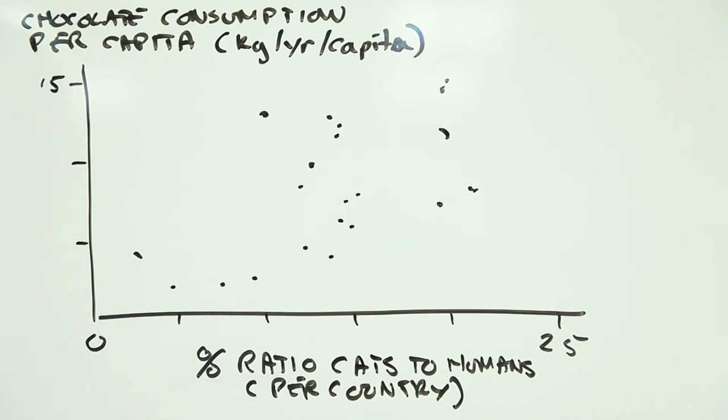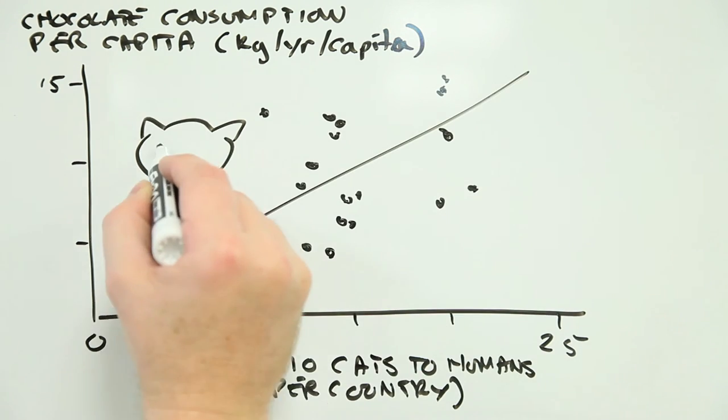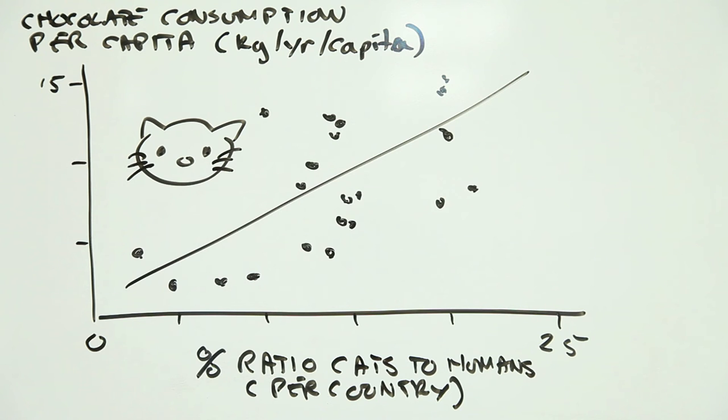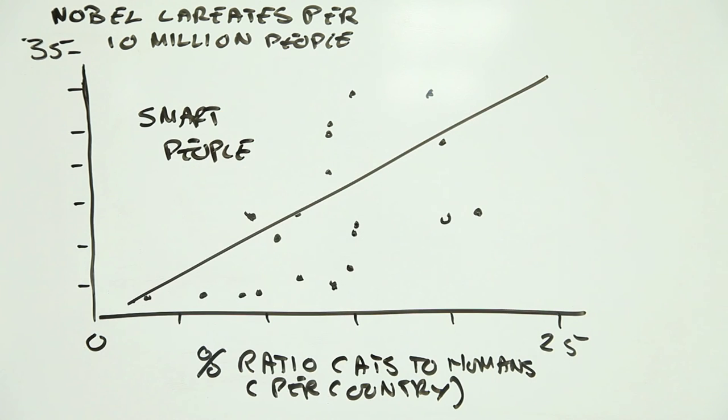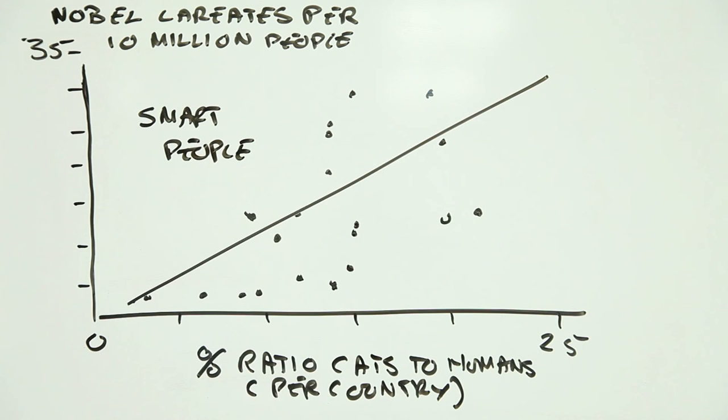Not only do the number of cats per capita in a country correlate with the amount of chocolate each person eats, but they also correlate with the number of Nobel Prizes per head of population. The problem is, without evidence of cause and effect, these data are nonsense.